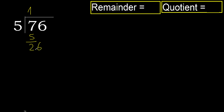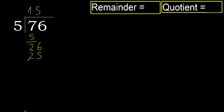Bring down the next digit: 26. 5 multiplied by 6 is 30, which is greater. So 5 multiplied by 5 is 25, which is not greater. Subtract — remainder is 1.